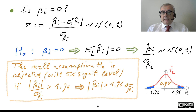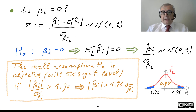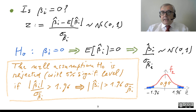The expectation is the expectation of beta-hat-i, and this is its standard deviation. Since beta-hat-i is normal, by standardizing we obtain a standardized normal variable.